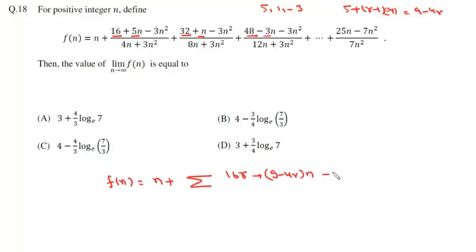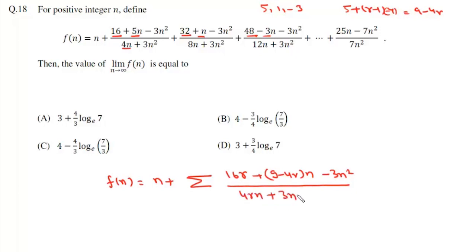This gives us (9 minus 4r) into (m minus 3n²), whole divided by... now this is 4, 8, and 12, so there will be 4rm plus 3n², where r varies from 1 to n. If we put r as n it will be 7n², so it will be the summation from 1 to n.